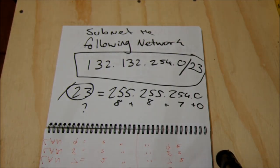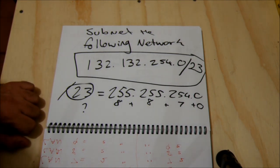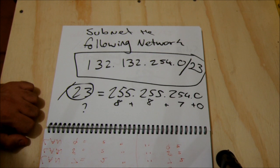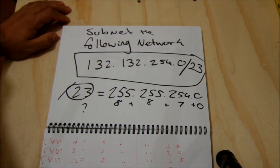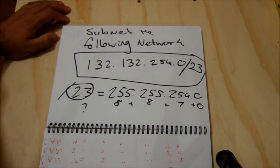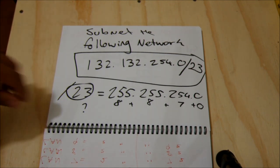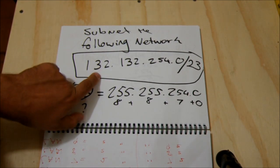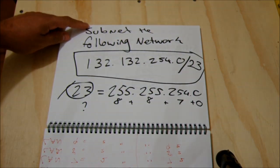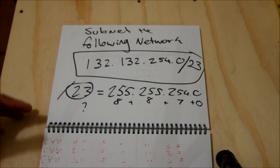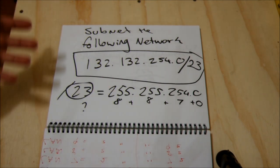G'day guys. As asked, this is just a quick tutorial on how to do variable length subnet masking. I'm going to use the example given for the VLSM subnetting quiz in computer networks and internets. So, how to subnet the network 132.132.254.0/23. To start off, we need to figure out what a slash 23 network is to get the decimal subnet mask for it.